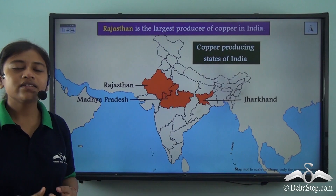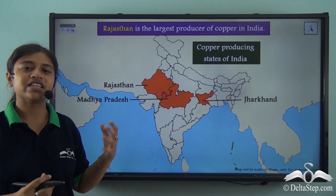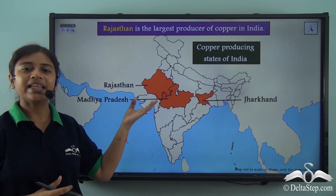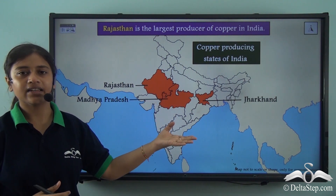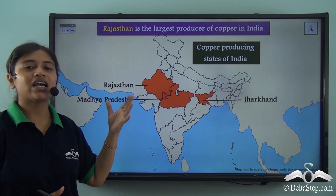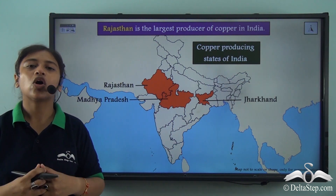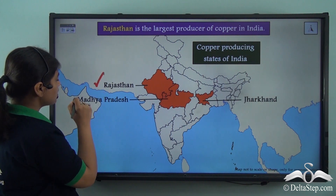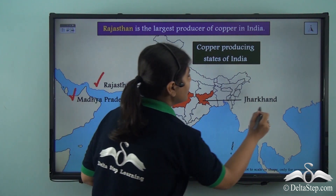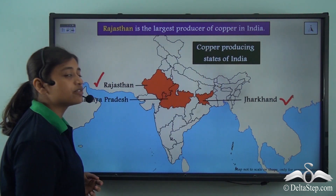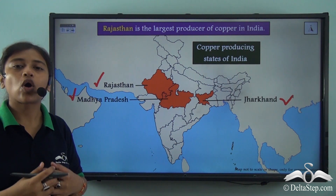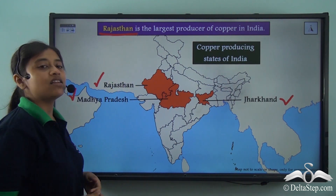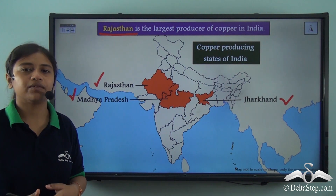Now let us see how Copper is distributed in India. It is present in many places in India, however the leading producers are Rajasthan, Madhya Pradesh and Jharkhand. Out of these, Rajasthan is the largest producer of Copper.